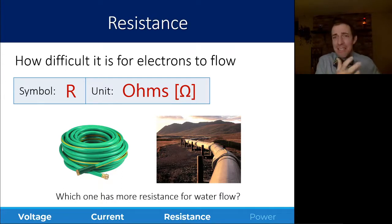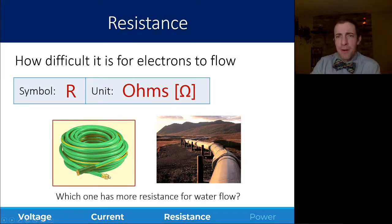Now, you could have resistance for electricity or resistance for water flow, like the analogy we used before. If we're talking about water flow, a resistance is going to be based on how large of a diameter the pipe or the hose is that you're trying to flow that water. So this garden hose is going to have a lot more resistance than this oil pipeline.